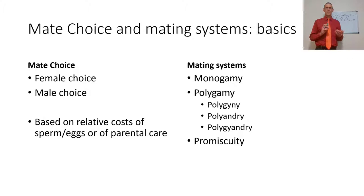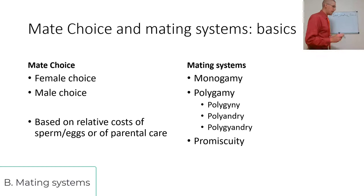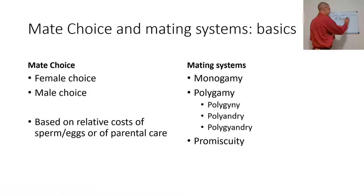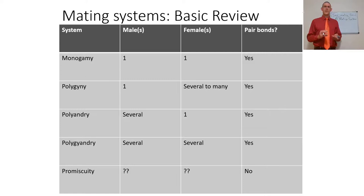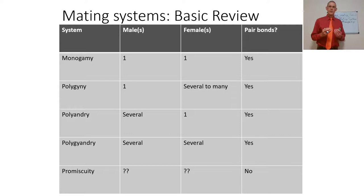Now there are different mating systems, and I want to look at each as optimal mating. Optimal foraging is getting the most resources per unit energy expended — mating is no different; it's an optimal fitness. Whichever organism gets the highest fitness from that mating is doing the best. Here are the different mating systems, starting with monogamy — a one-to-one relationship. That will generally mean an equal allocation of resources by the male and by the female.